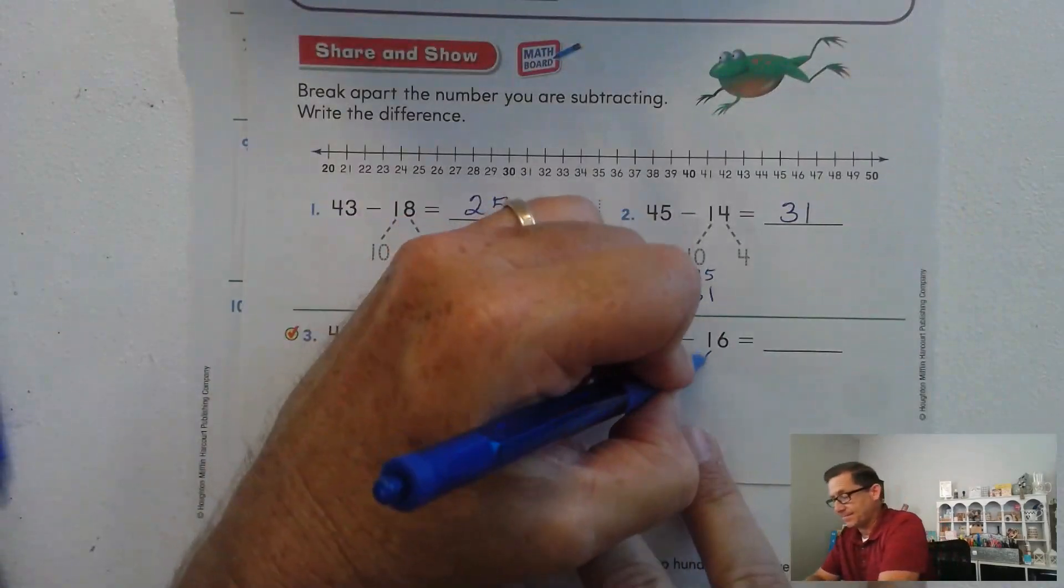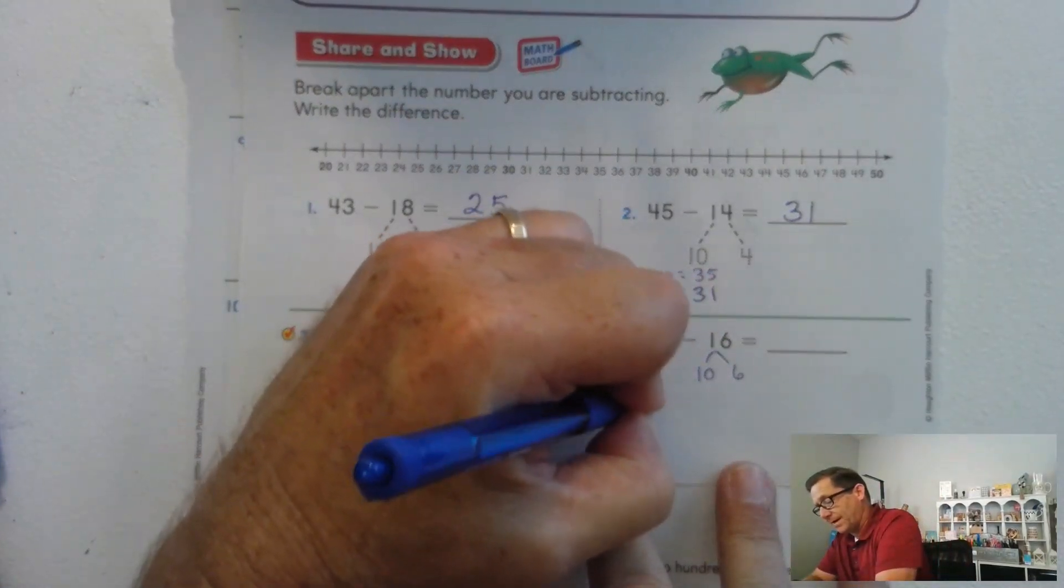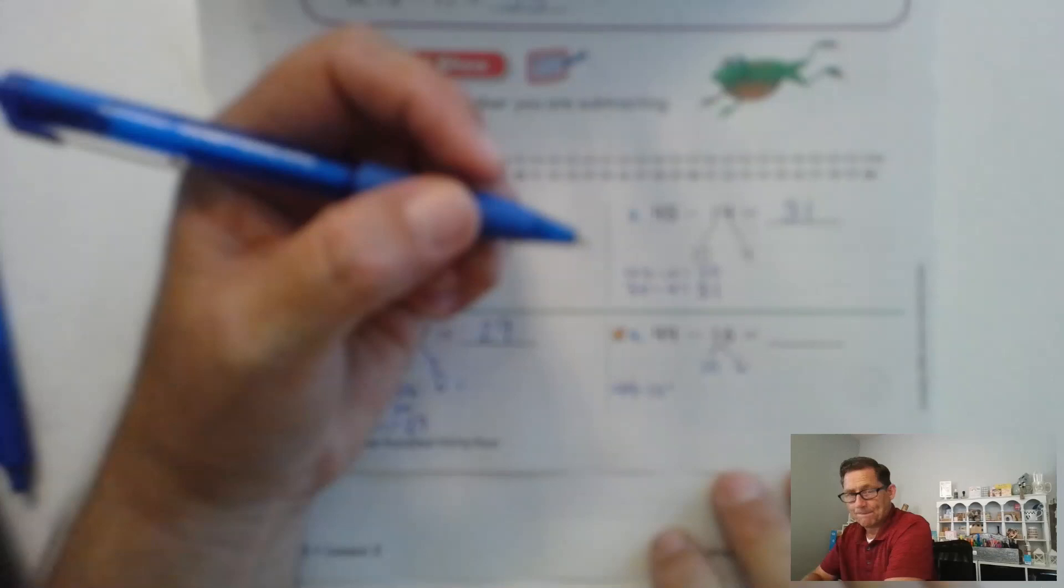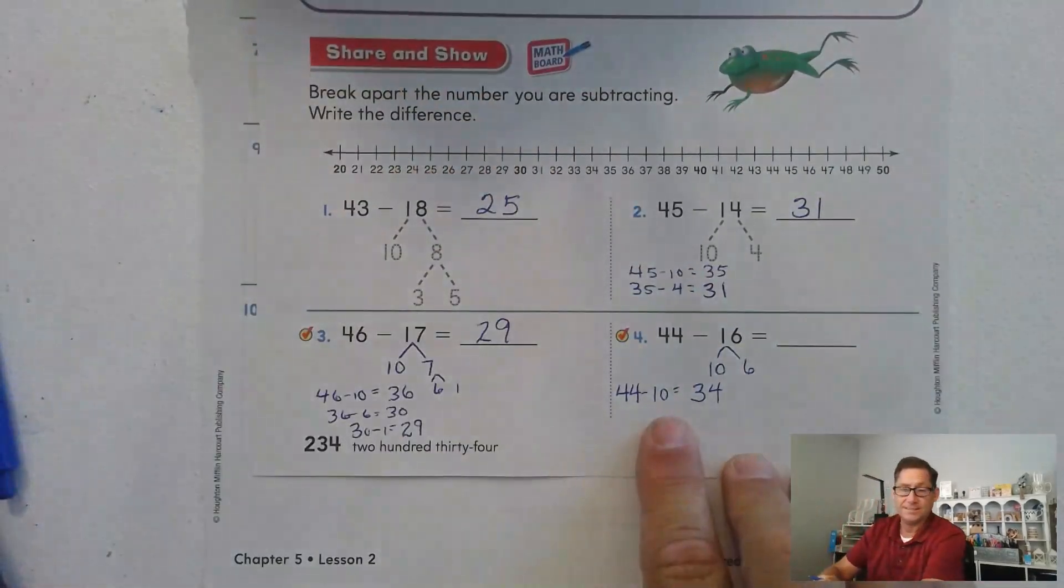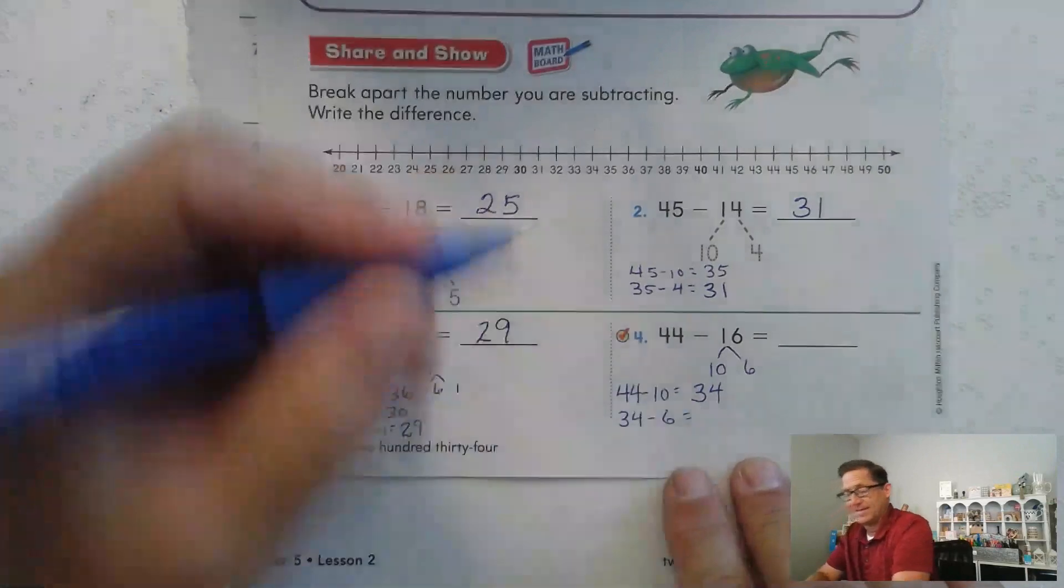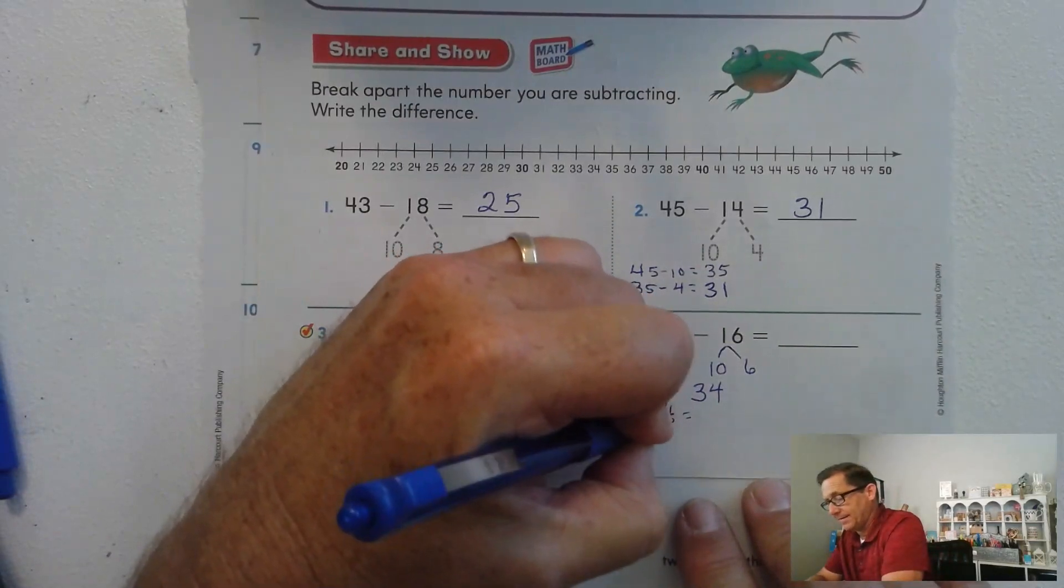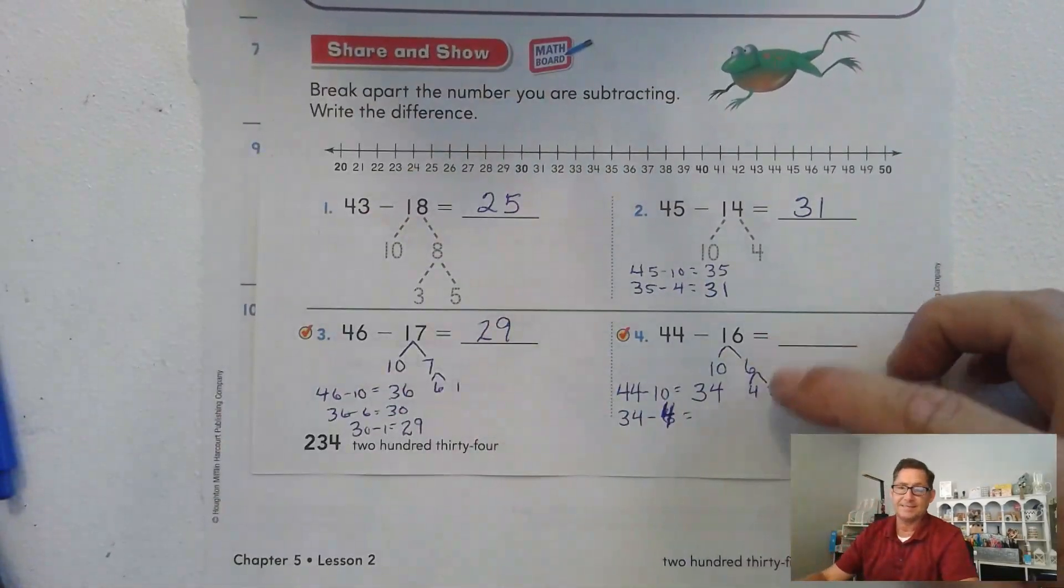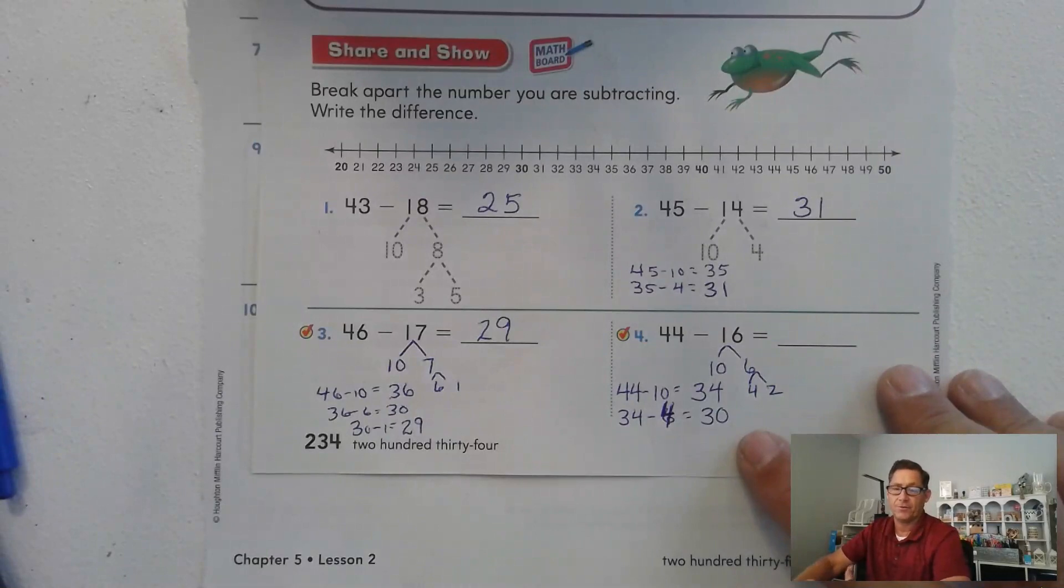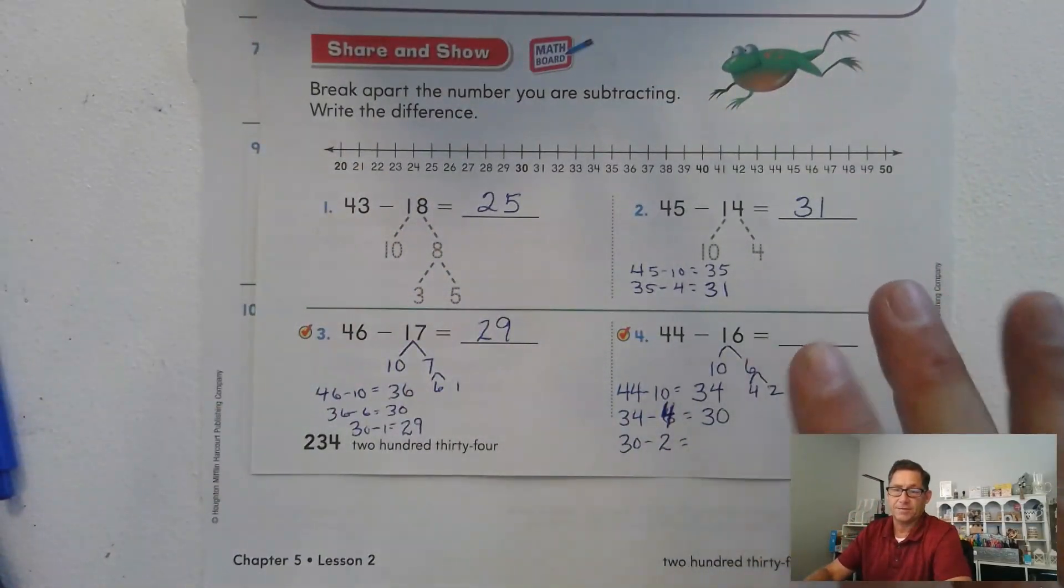44 minus 16. Again, we want to split up the 16 into 10 and 6. Because 44 minus 10 should be an easy subtraction problem. 44 minus 10 is 34. The 1s digit doesn't change. 4 take away 1 is 3. Now we're at 34 and we have to take away 6. We're going to break up the 6 into 4 and 2. 34 minus 4 gives me 30. Now we have to subtract 2 from 30. Just count backwards. 30, 29, 28.